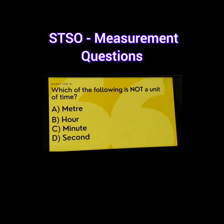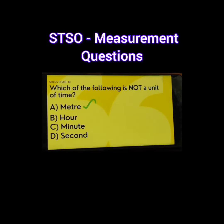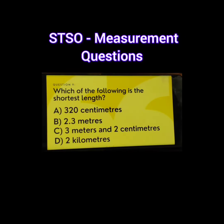Question number 8. Which of the following is not a unit of time? A. Meter, B. Hour, C. Minute, D. Seconds. The correct answer is A. Meter.